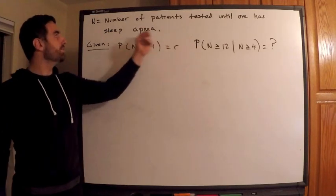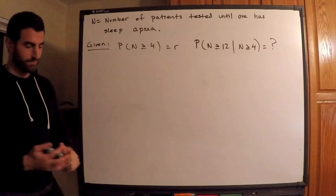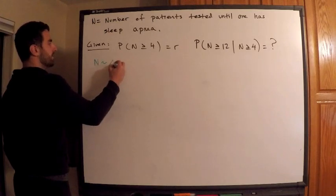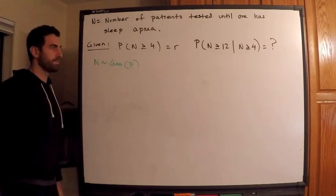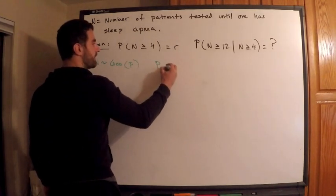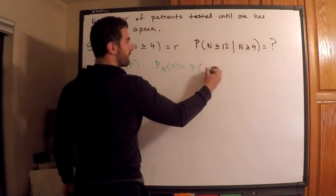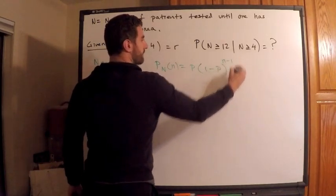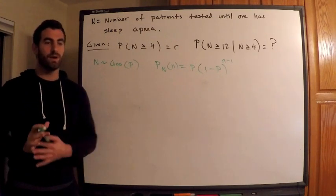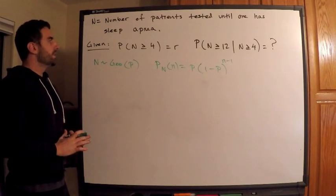That's exactly the geometric distribution. So I know that N is distributed geometric, which means I can write down the generic distribution. P sub N of n is equal to probability that someone has sleep apnea times (1 minus p) raised to the (n minus 1). This is the formulation that we want to write for this particular case. I know there's another way to write down a geometric random variable, this is the one pertaining to our situation here.